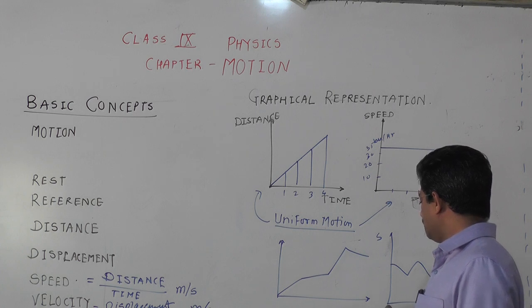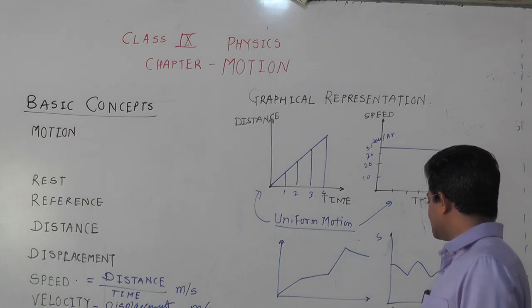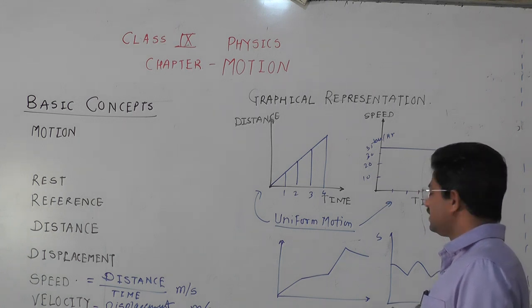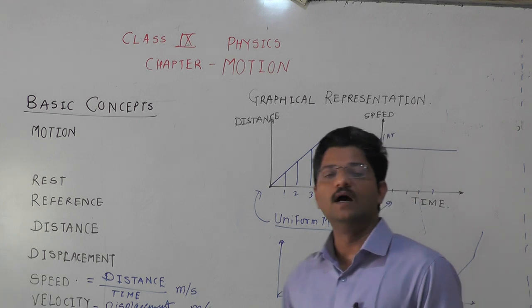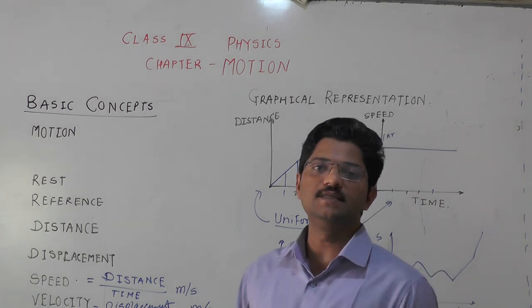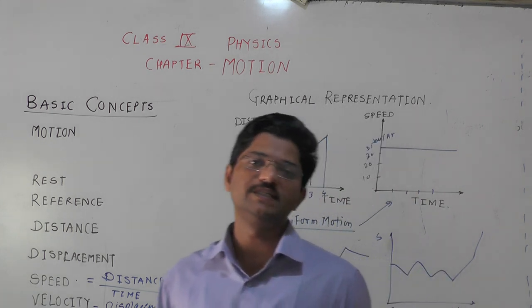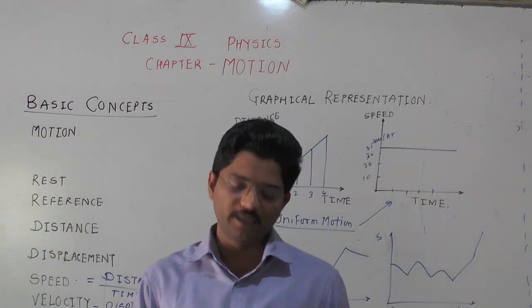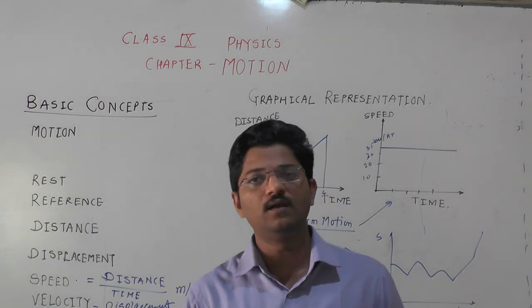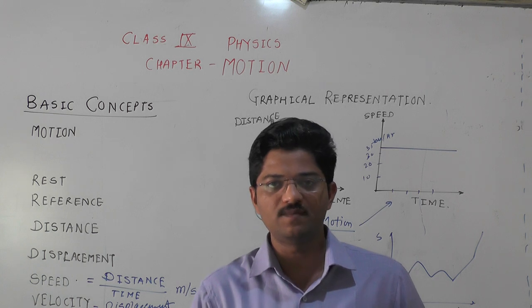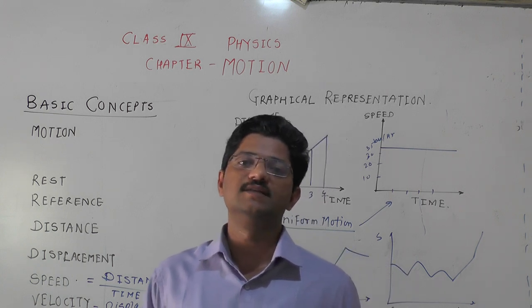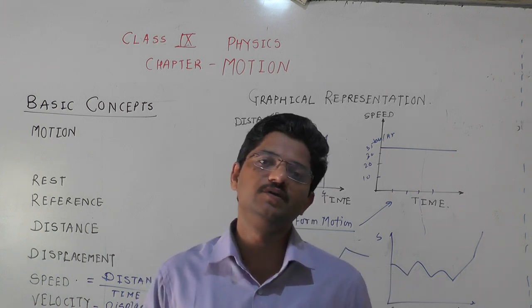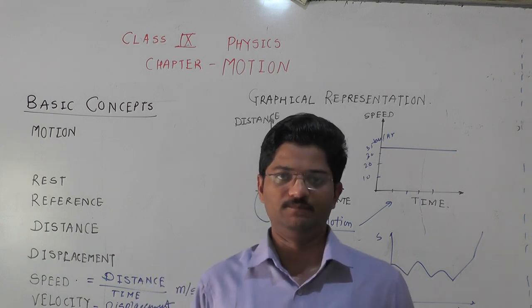Scalar quantities generally have positive values, while vector quantities can have negative values. Displacement can be negative, but distance is always positive. Velocity can be negative, but speed cannot be negative — this follows from the relationship: speed involves distance, and velocity involves displacement. Non-uniform motion is that kind of motion in which unequal distances or displacements are covered in either equal or unequal time intervals.